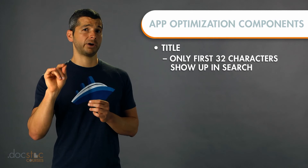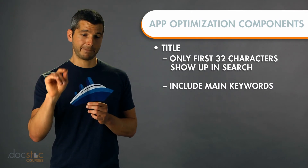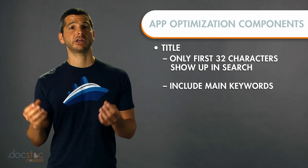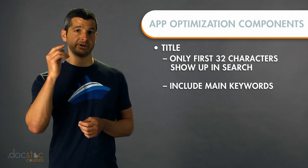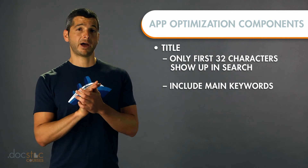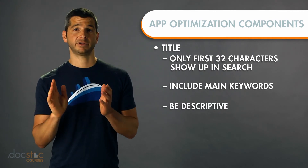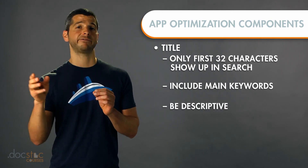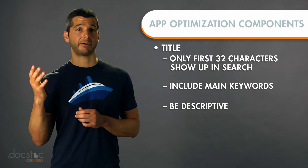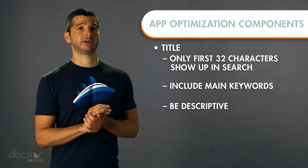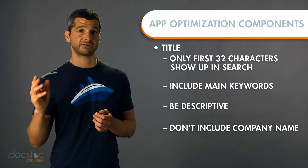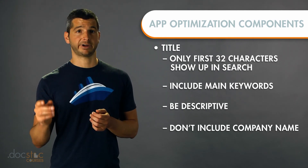You're going to want to include your main keywords in the title of your app. If you're targeting high-value keywords, make sure they're in your title and make sure they're early in your title. Absolutely be descriptive — don't just try to stuff it with keywords. Make sure it gives the user a good idea of what the app does. And don't include your company name; your company name is included elsewhere in the app and it's searchable, so there's no need to include it in the title.